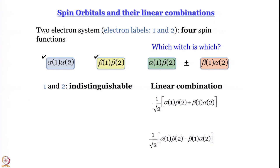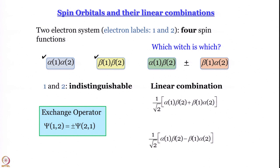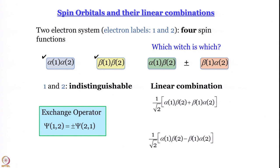To understand why these linear combinations matter, we bring in the concept of symmetry. The exchange operator interchanges the labels of the particles: applying it to ψ(1,2) gives either +ψ(2,1) or −ψ(2,1). We work only with wave functions that are either symmetric (eigenfunction of +1) or antisymmetric (eigenfunction of −1) with respect to exchange — where exchange means whatever was in terms of coordinate 1 becomes coordinate 2, and vice versa.